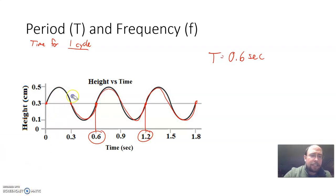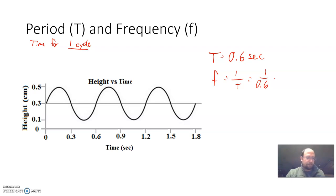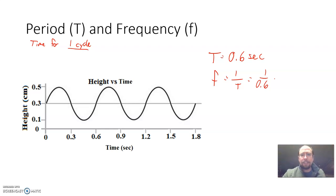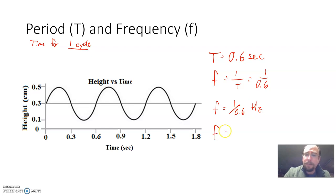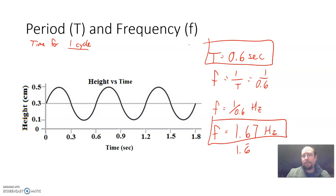Finding the frequency is 1 divided by the period. So 1 divided by 0.6 gives us a long string of numbers, and that's okay. You can either leave the answer as 1 divided by 0.6, or you can say the frequency is 1.67 or 1.6 repeating hertz. Either of those answers is good. That's how you find period and frequency off of a graph.